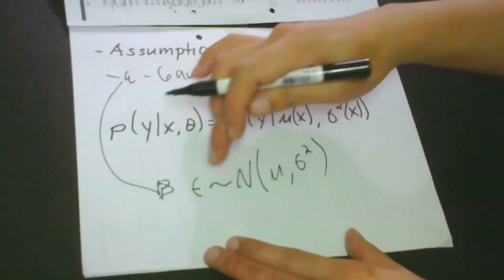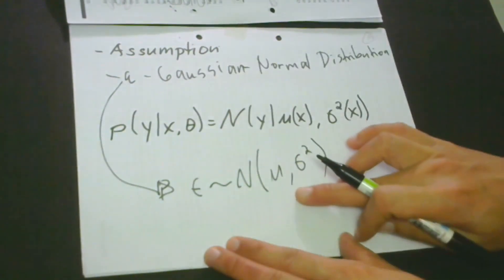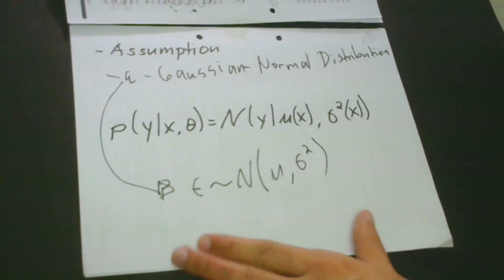which means that this is the approximation of the natural distribution of the mu and the variance. And of course, if we are going to plot these points, then we may be given this kind of shape.